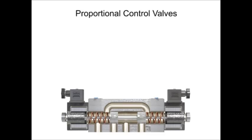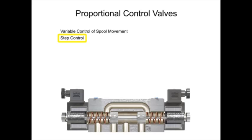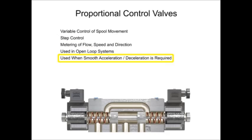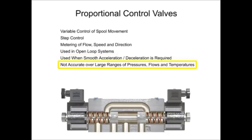Proportional control valves allow for variable control of spool movement, which allows more step control and metering of flow, speed, and direction. Most valves of this design are used in open-loop systems to smoothly accelerate and/or decelerate an actuator or cylinder. The proportional control valve allows for a simpler hydraulic circuit, but it is not accurate over a broad range of pressures, flows, and temperatures, and neither are they highly responsive. Proportional valves offer a variety of machine cycles which can safely be operated at greater speeds, resulting in improved machine cycle times and production rates.